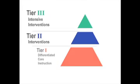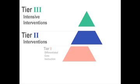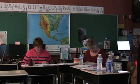Scores that are below benchmark fall into strategic and intensive levels, or Tier 2 and Tier 3 levels of support.